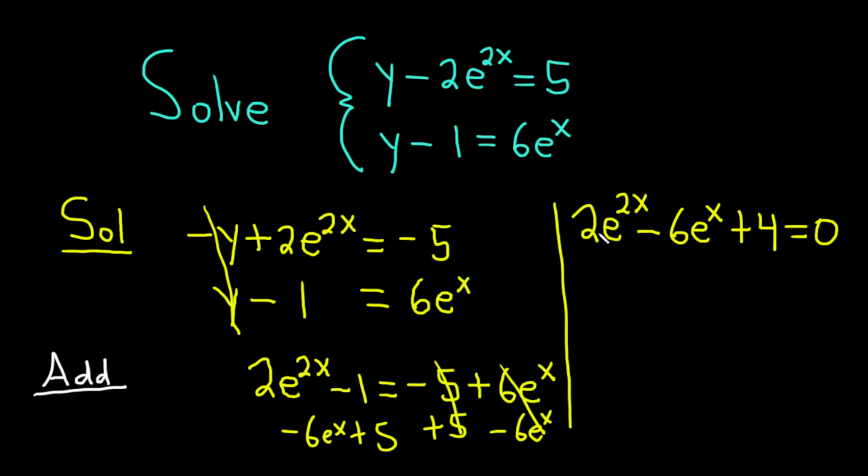It looks like we have a common factor of 2, so we can just divide it away just to make it a little bit easier. So this is e to the 2x, and then 6 over 2 is 3, so we have minus 3e to the x, and then 4 over 2 is 2. And this is equal to 0.